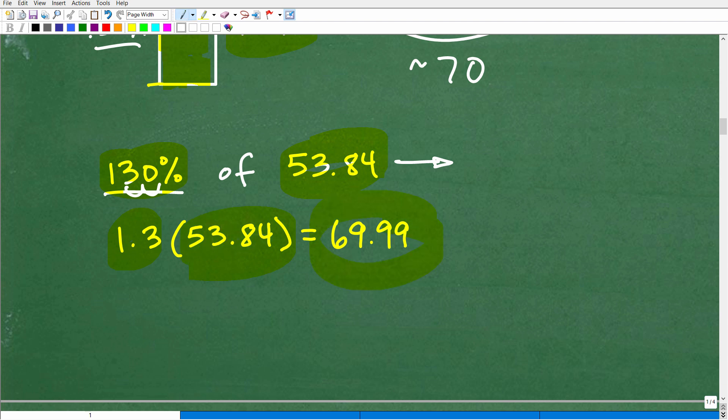So 130%, 53.84 is 1.3 times 53.84, and guess what you get in your calculator? 69.99, which again, effectively is 70. So it checks out.